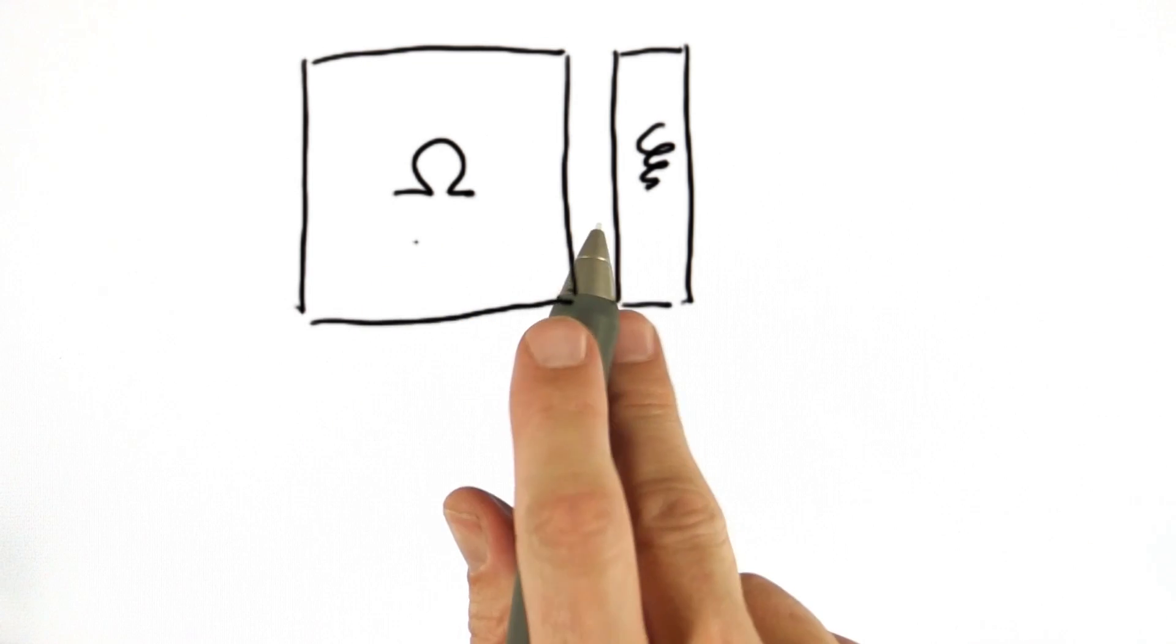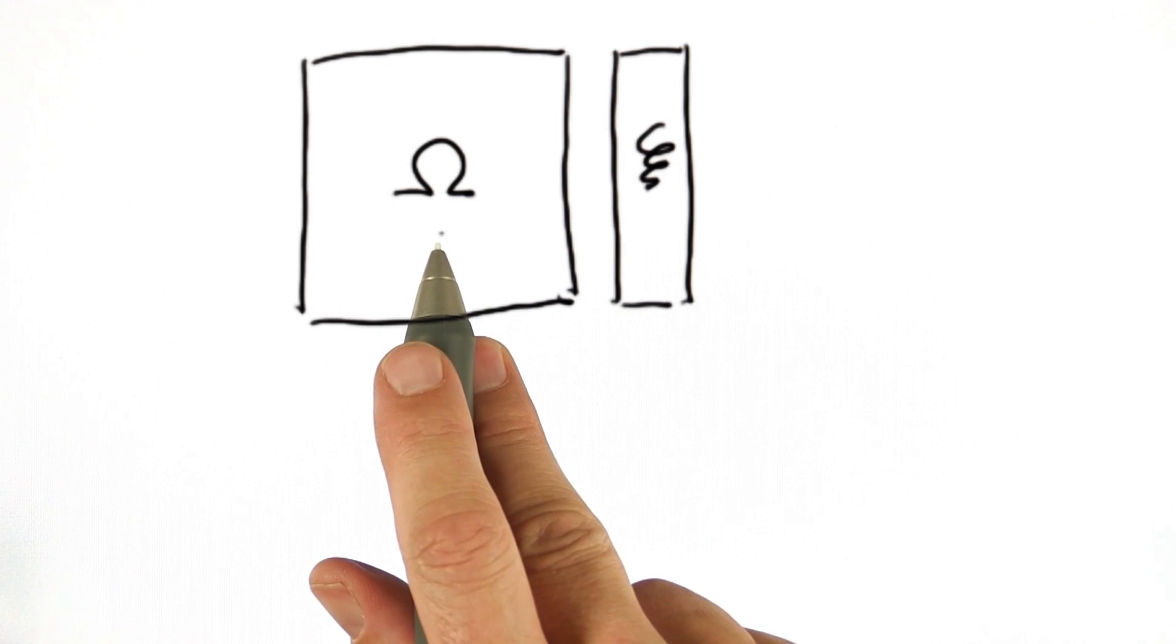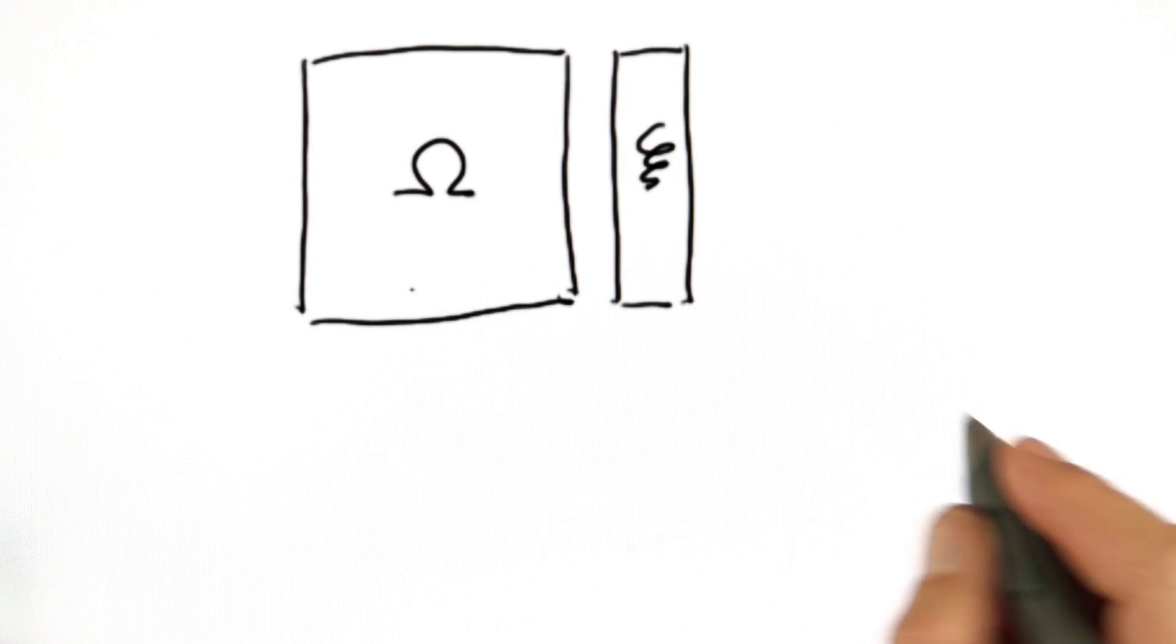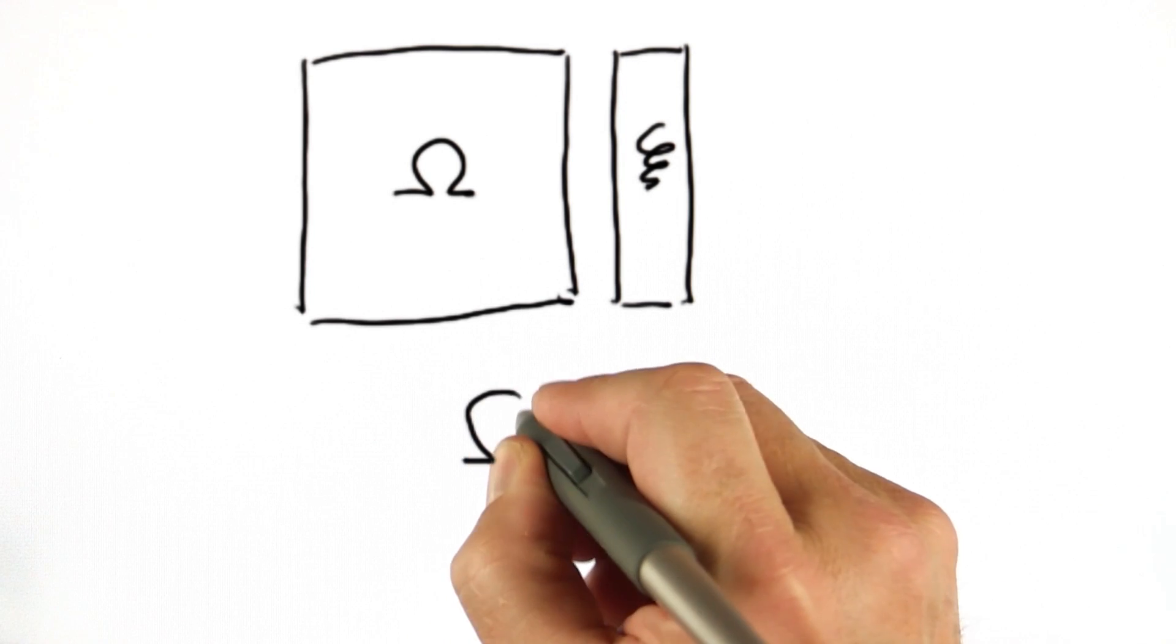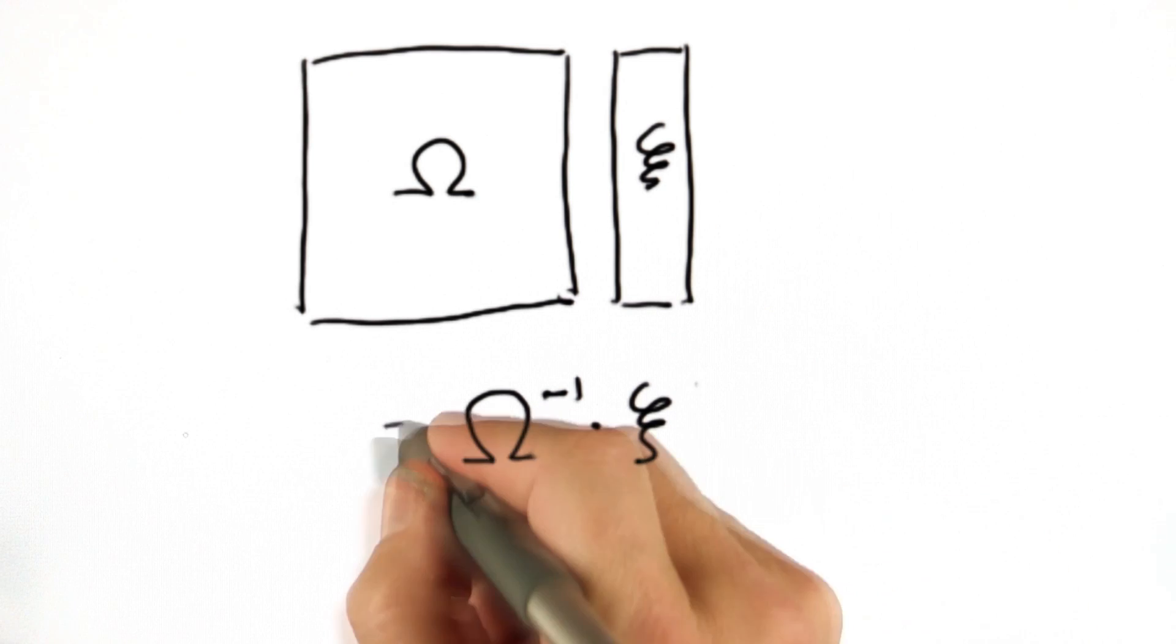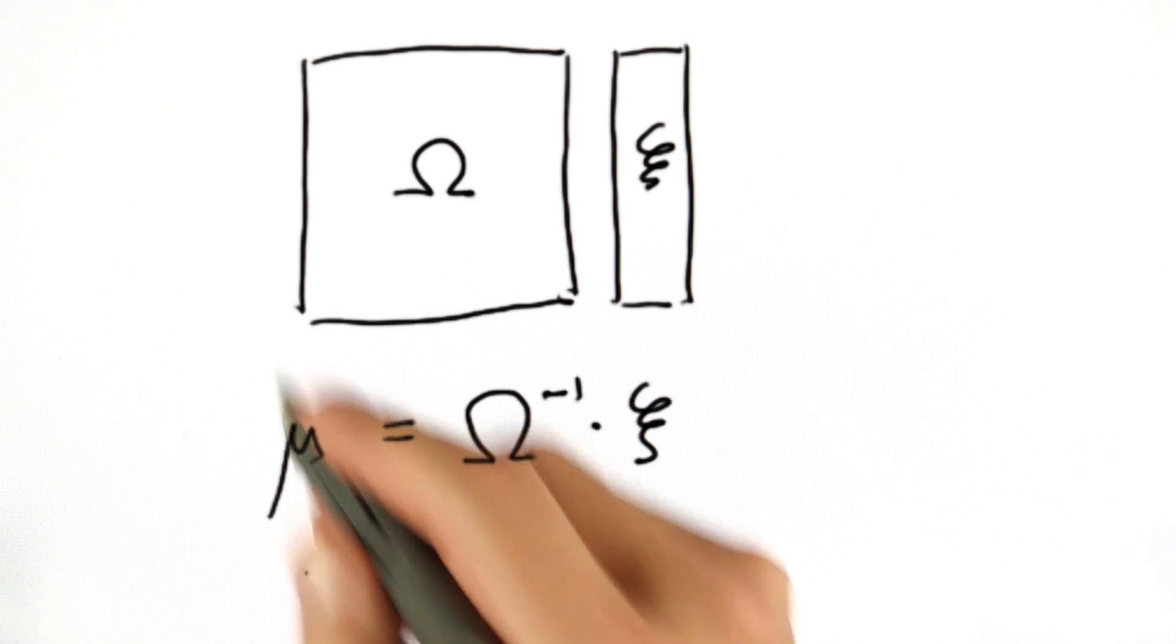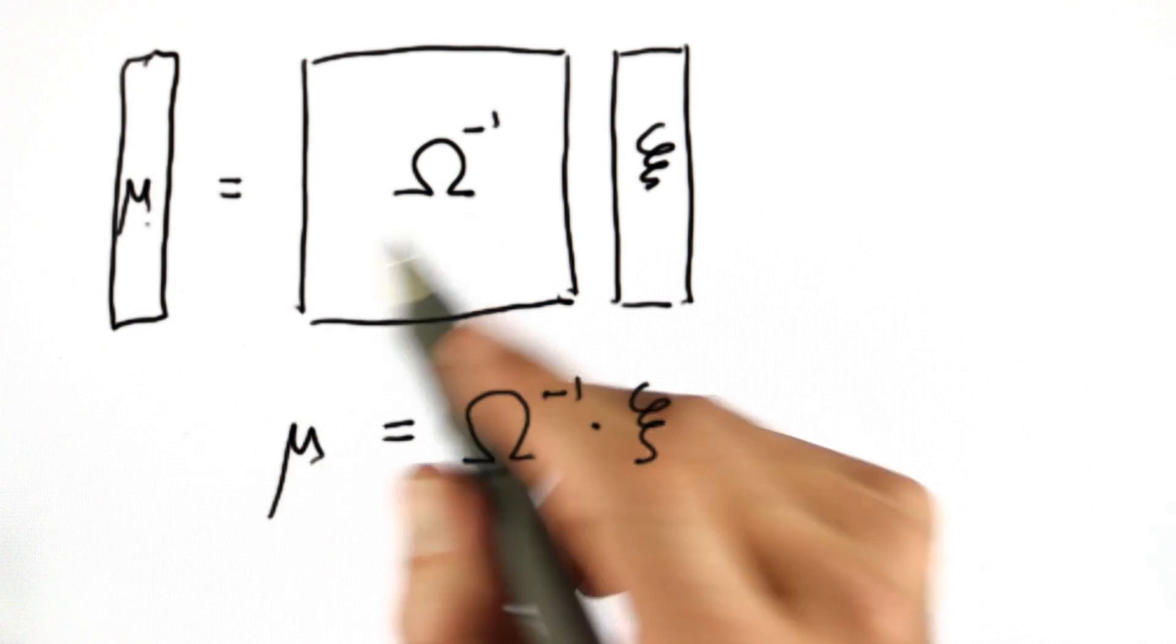Then I can find the best solution for all the landmark positions or the world position by a very simple mathematical trick, and that is completely counterintuitive. I invert the omega, multiply with xi, and out comes a vector mu, which gives me the best estimates for all the robot locations and the landmark locations.